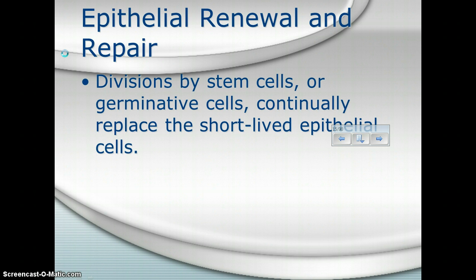How does epithelium repair and replace itself? There's usually a layer of cells involved in continuous cell division. Epithelial cells need this because they're constantly being worn away — they are surface cells. Your skin is constantly being rubbed off and those cells are falling away, so they're being replaced by a layer of actively dividing cells that we call the germinative cells.